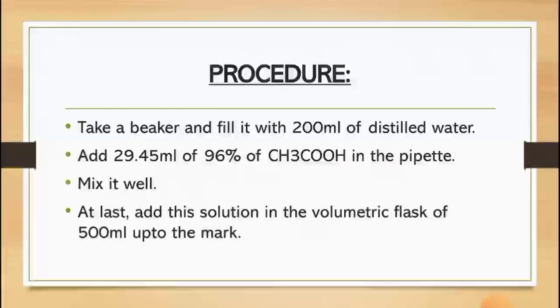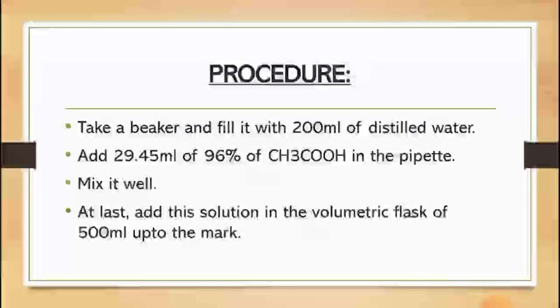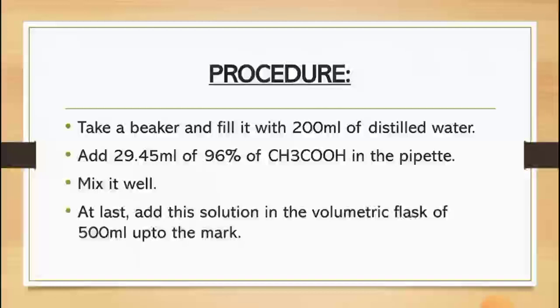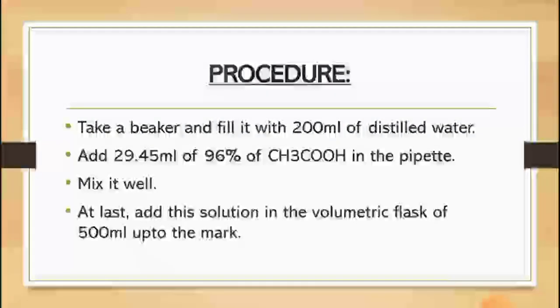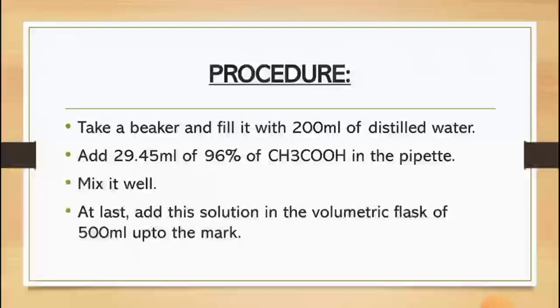Here are the four points of the procedure of making molar solution of acetic acid. First, we have to take a beaker and fill it with 200 ml of distilled water. Now, we have to add 29.45 ml of the 96% acetic acid in the pipette. 29.45 ml is the molar volume that we have calculated in the experiment. The third point is we have to mix it well, and the fourth point is to add the solution in the volumetric flask of 500 ml up to the mark.